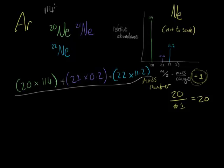I've got my calculator here: 114 plus 0.2 plus 11.2. Let's work this out: 114 plus 0.2 plus 11.2, and that gives us 125.4. Let me circle that in red: 125.4.